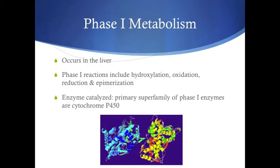Once Dianabol has reached the liver, it can be metabolized. Dianabol has many different metabolites. Phase I reactions that produce these metabolites include hydroxylation, oxidation, reduction, and epimerization. These reactions are enzyme-catalyzed. The primary superfamily of Phase I enzymes are cytochrome P450s. Phase I reactions increase polarity and make Dianabol more accessible to Phase II metabolizing enzymes.